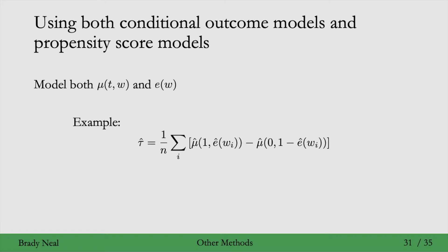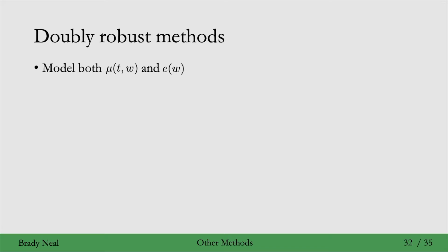One special class of methods that models both the conditional outcome model and the propensity score model is known as doubly robust methods. One important property of doubly robust methods is that they are consistent if either the conditional outcome model or the propensity score model is consistent. And you can think of consistent here as meaning that given infinite data, our model will be correct. So given infinite data, mu hat will match mu and e hat will match e.